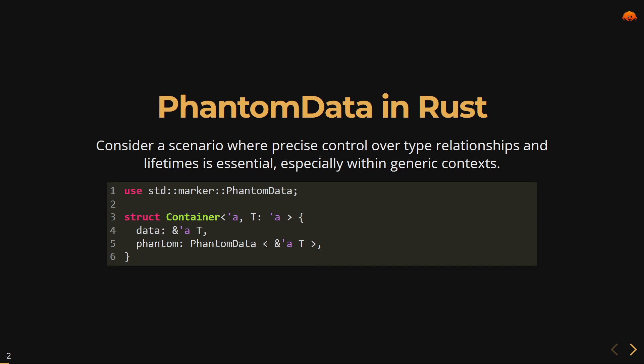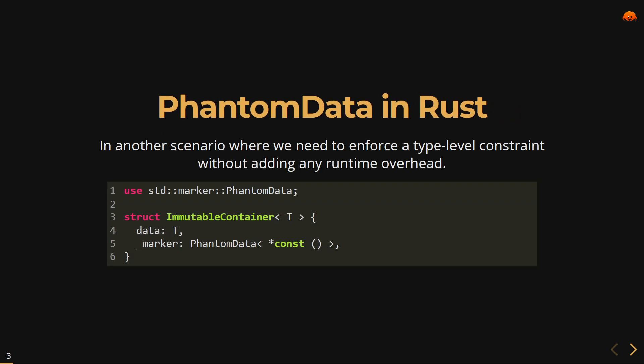Consider a scenario where precise control over type relationships and lifetimes is essential within a generic context. In this example we define a struct Container that holds a reference to data of type T. The PhantomData field is used to signal that the container has a lifetime parameter 'a and is borrowing a reference of type T. Although PhantomData doesn't store any actual data, it influences the compiler's understanding of the struct's type.